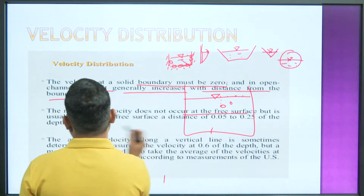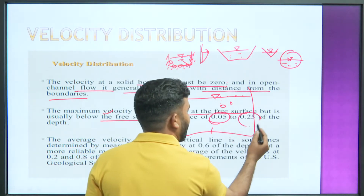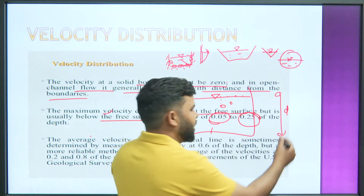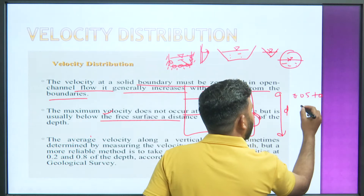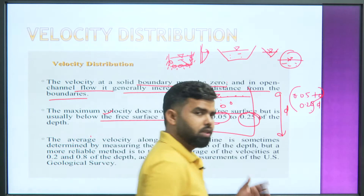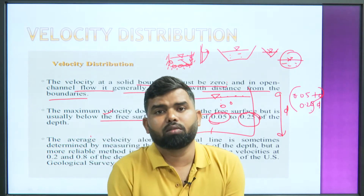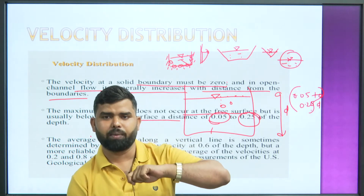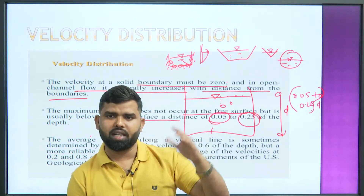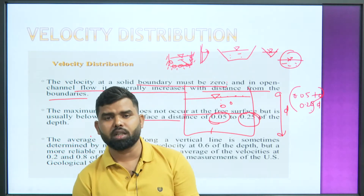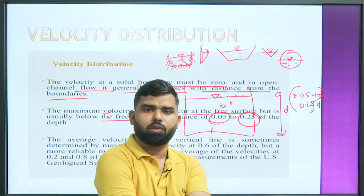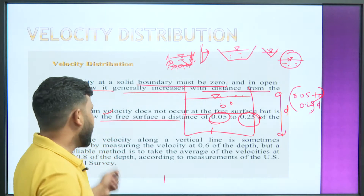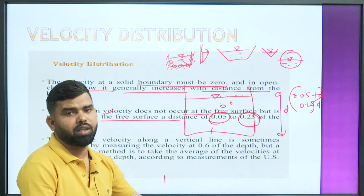The maximum velocity does not occur at the free surface, but is usually below the free surface at a distance of 0.05 to 0.25 of the depth of the channel. Remember this: if the total depth is D, then maximum velocity will be found at a depth of 0.05 to 0.25 times D from the surface. This value is very important — note it exactly. This is an objective question that can appear anywhere in exams.